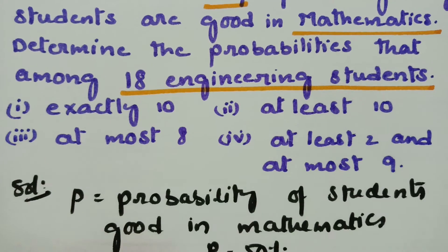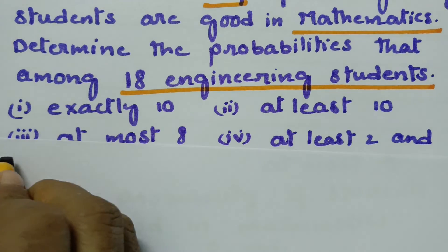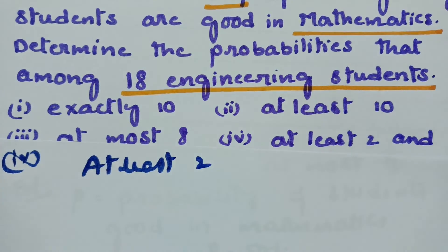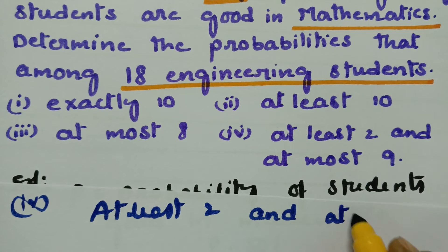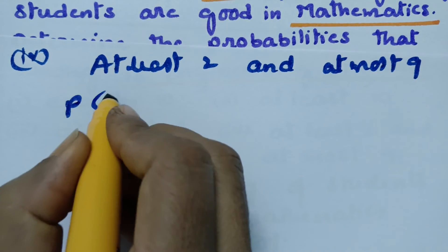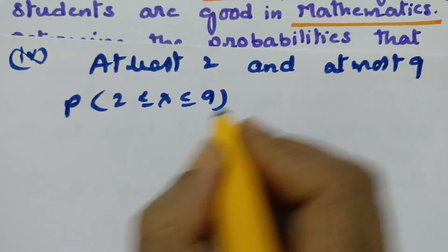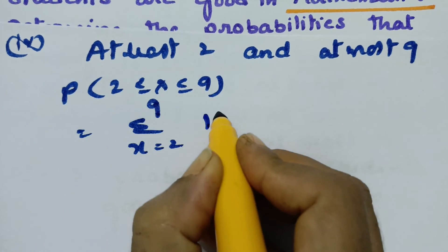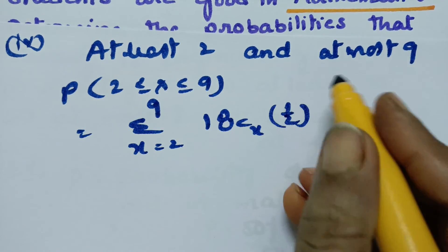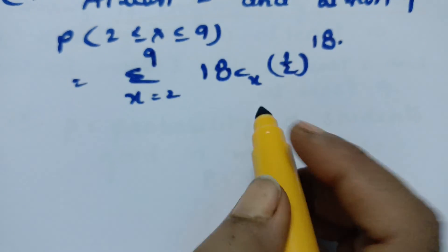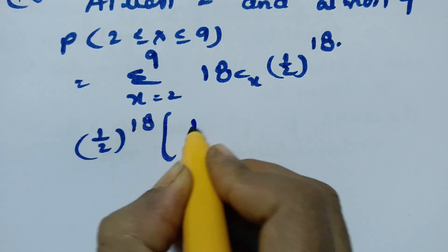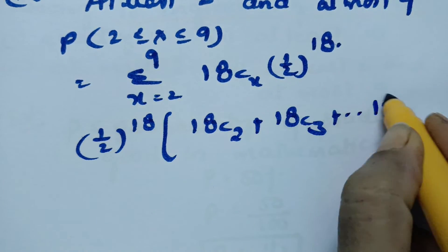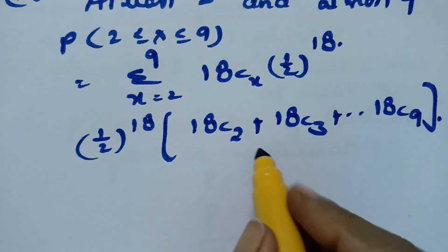The next question is at least 2 and at most 9, meaning a minimum of 2 and a maximum of 9. The probability of 2 ≤ X ≤ 9 means we have to add from X=2 till X=9: sum of 18CX times P^X times Q^(18−X). This becomes (1/2)^18 times [18C2 + 18C3 + ... + 18C9]. This is the answer.